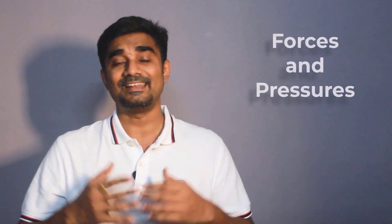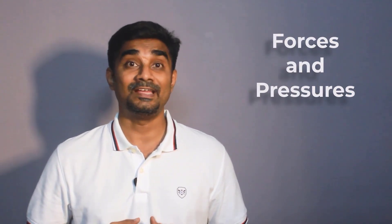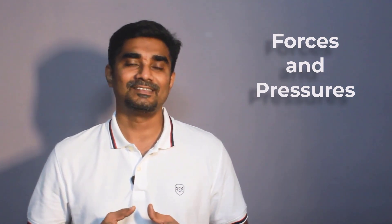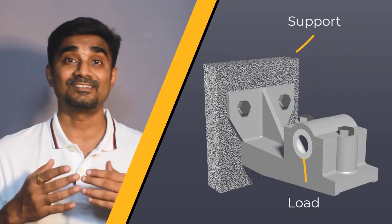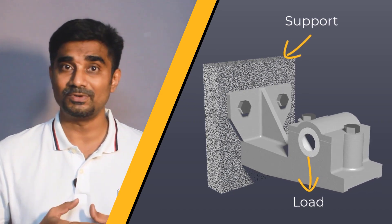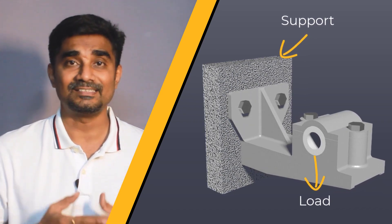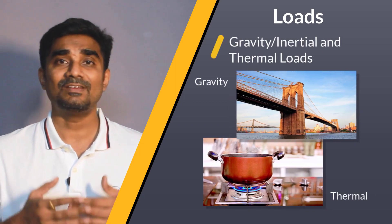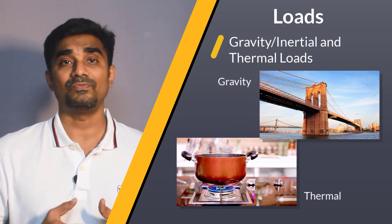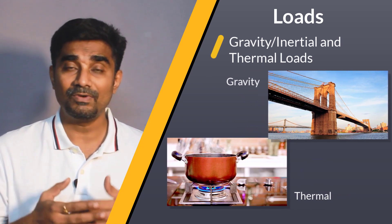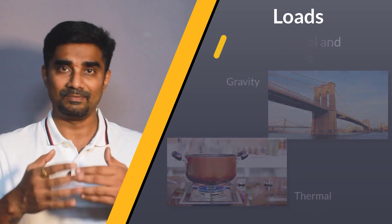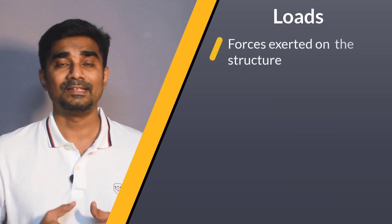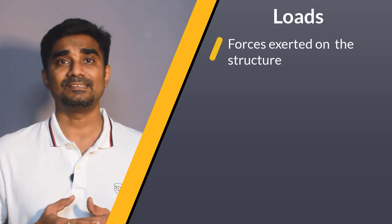For any stress analysis, the engineers will have to specify appropriate boundary conditions to get the expected results. The structure should be constrained with appropriate supports and the excitations are provided via loads. There are different types of loads available in ANSYS Mechanical. Gravity and other inertial loads as well as thermal loads reflect the influence of the environment on our structure and are covered in separate lessons. We will focus on loads that are associated with forces exerted on our structure.